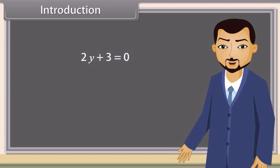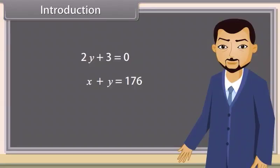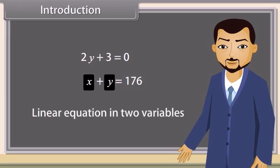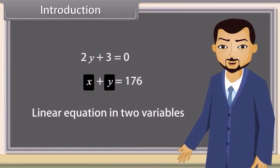Now tell me which equation is this? This is also a linear equation. Yes, this is also a linear equation, but it has two variables — x and y. So it is called a linear equation in two variables. We want to know more about this, sir. Okay, so we will study linear equations in two variables today.